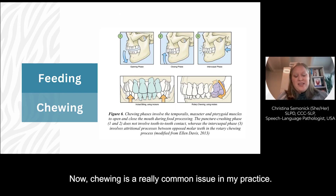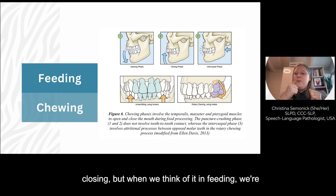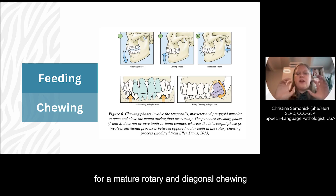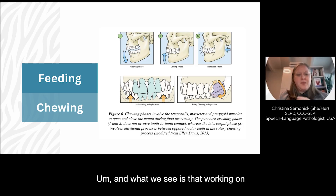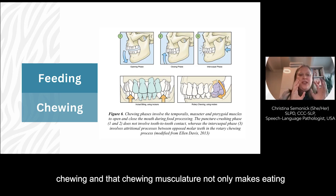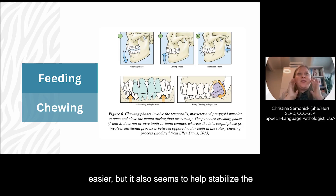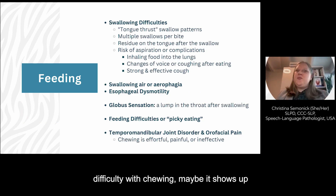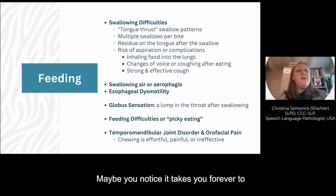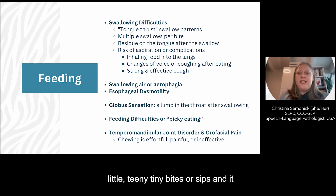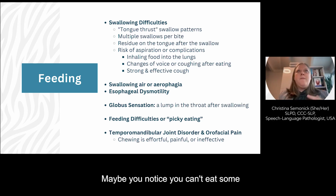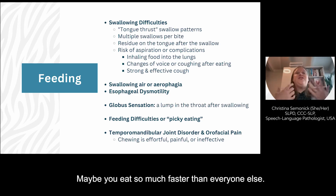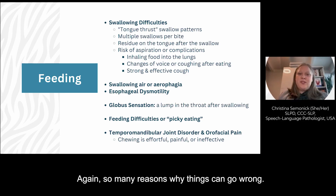Chewing is a really common issue in my practice. Often people just think of the jaw as opening and closing, but when we think of it in feeding, we're using those front teeth to bite and tear food, and we want to use those back teeth for a mature rotary and diagonal chewing pattern that really gives good, effective grinding. Working on chewing and that chewing musculature not only makes eating easier, but it also seems to help stabilize the TM joints because you actually build up muscle when chewing functionally. Maybe you notice it takes you forever to eat because you can only take tiny bites or sips, and maybe you have to swallow more than once to get it down, or you can't eat some textures you used to, or you feel like you don't have enough saliva — or too much.